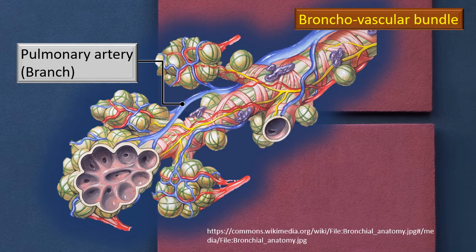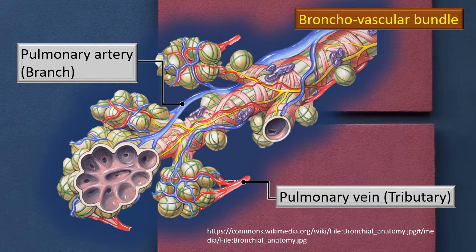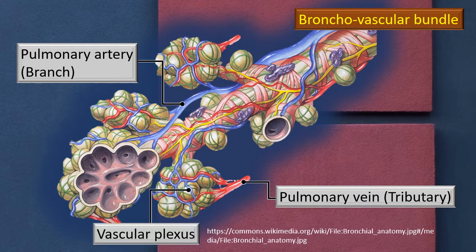Recalling this photograph of the bronchovascular bundle: marked in blue is the pulmonary artery, or rather one of its branches, and marked in red is the pulmonary vein. As you trace it down to the alveolar level, it ends in a vascular plexus located in the alveolar septa — in the connective tissue between the alveoli. This capillary plexus is important for the blood-air barrier discussion.